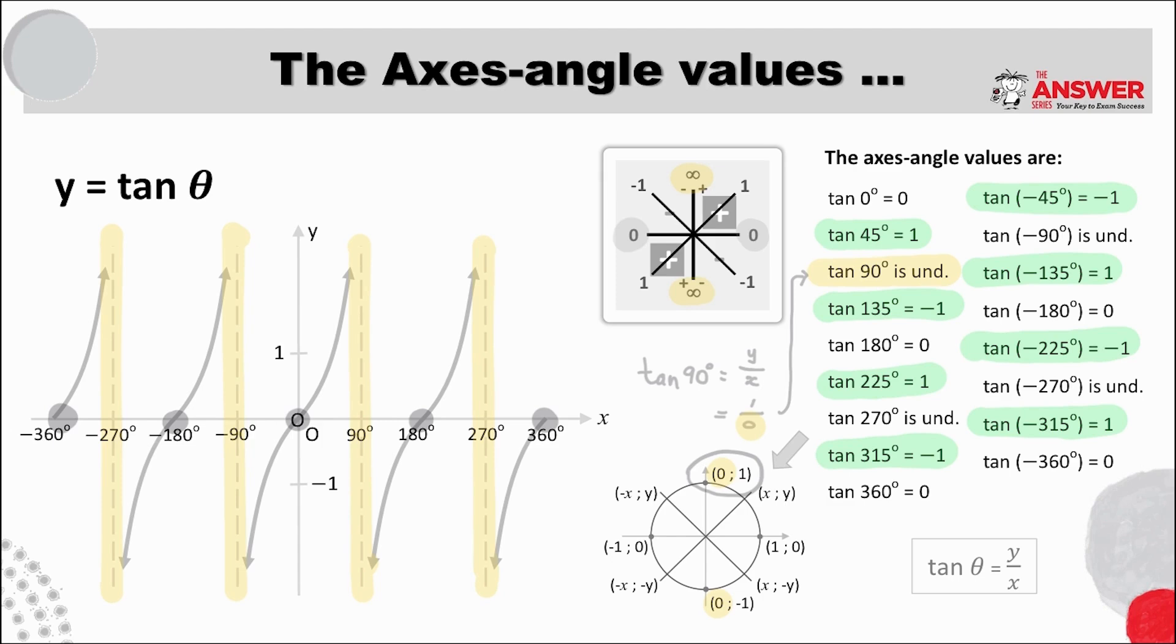And just a quick reminder here that an asymptote is a line that a graph tends towards but never touches or cuts. You may want to pause the video here for a moment to give yourself enough time to go thoroughly through everything about tan.